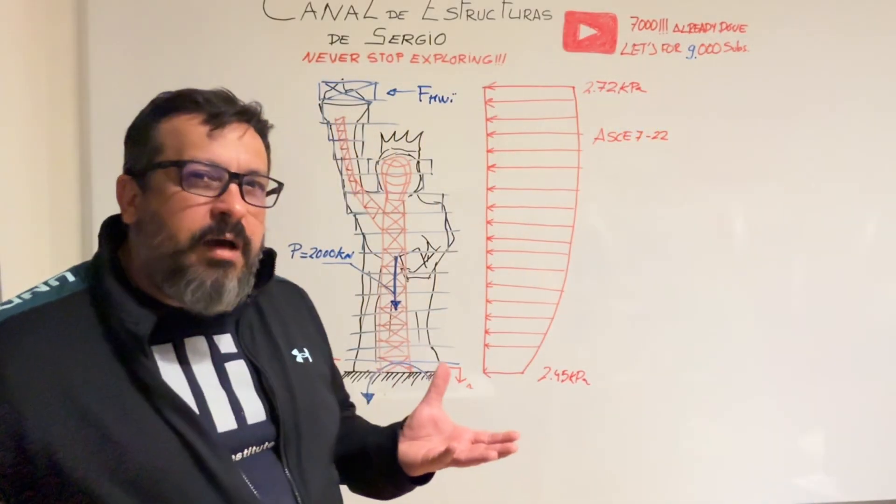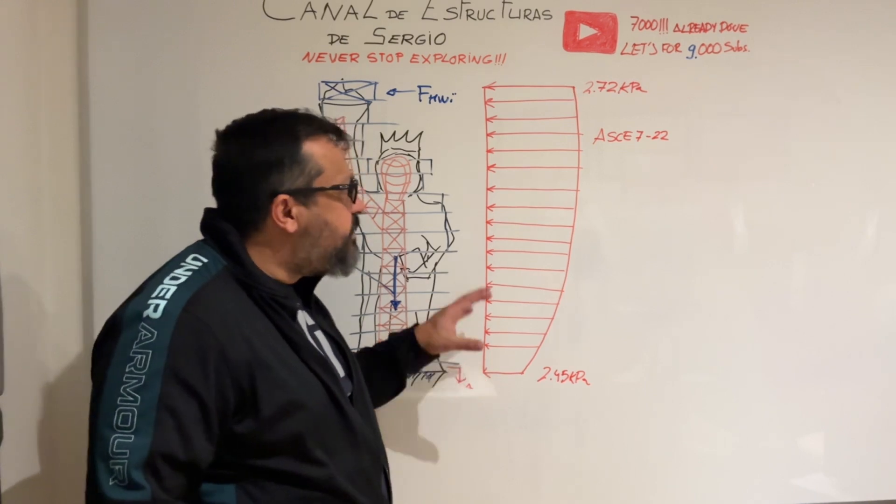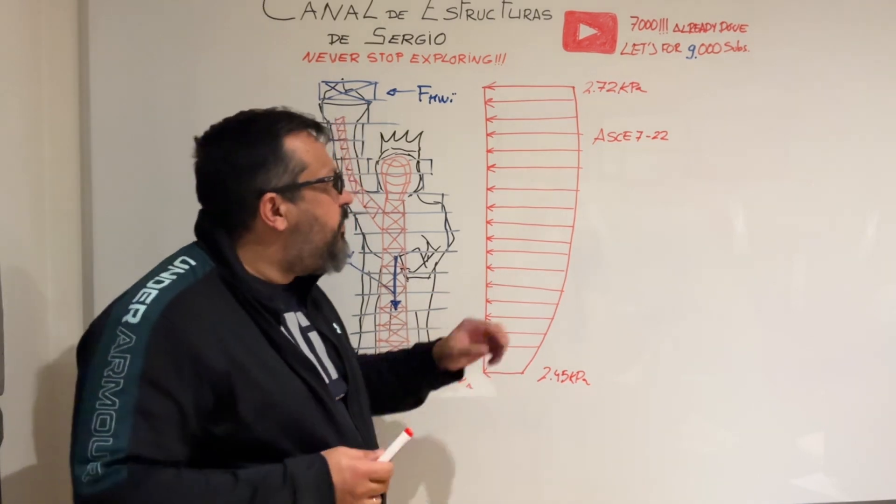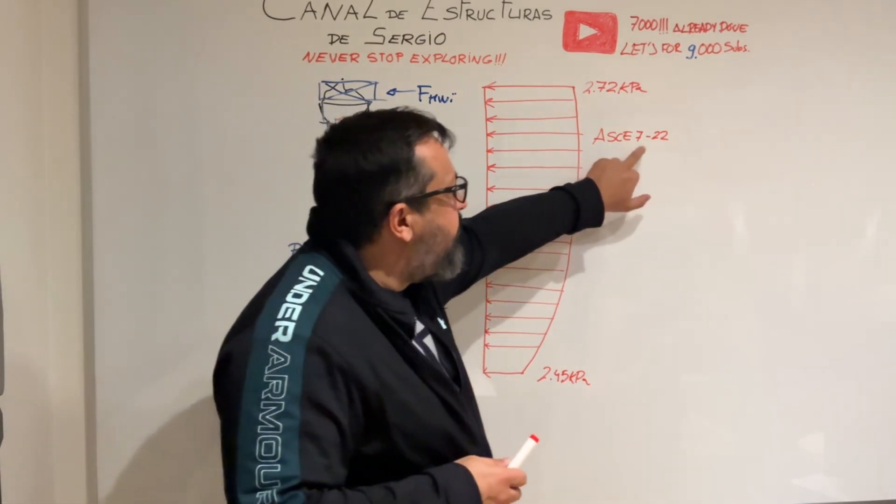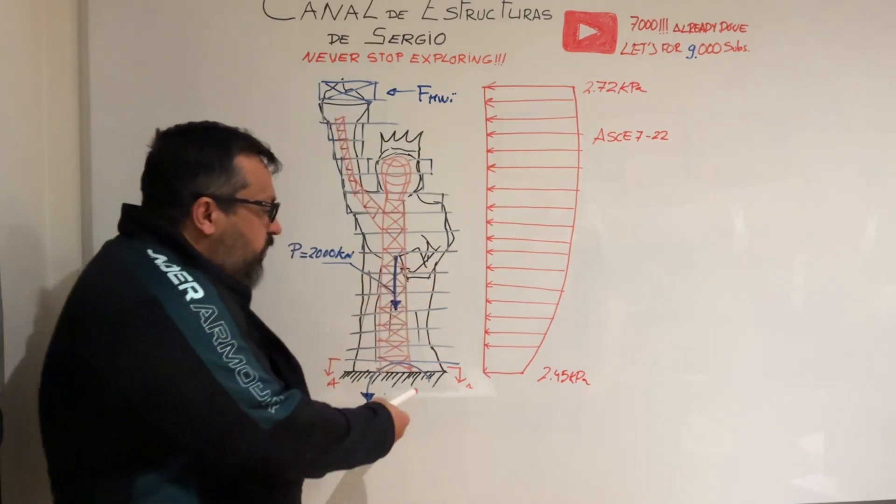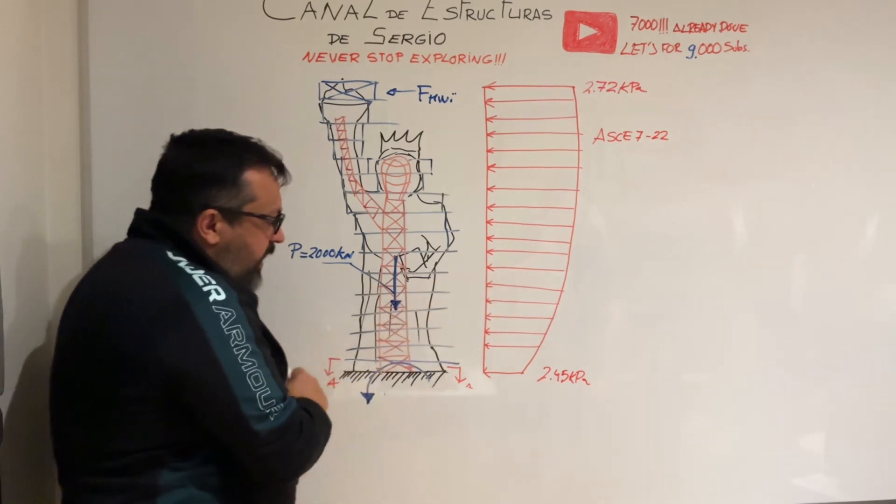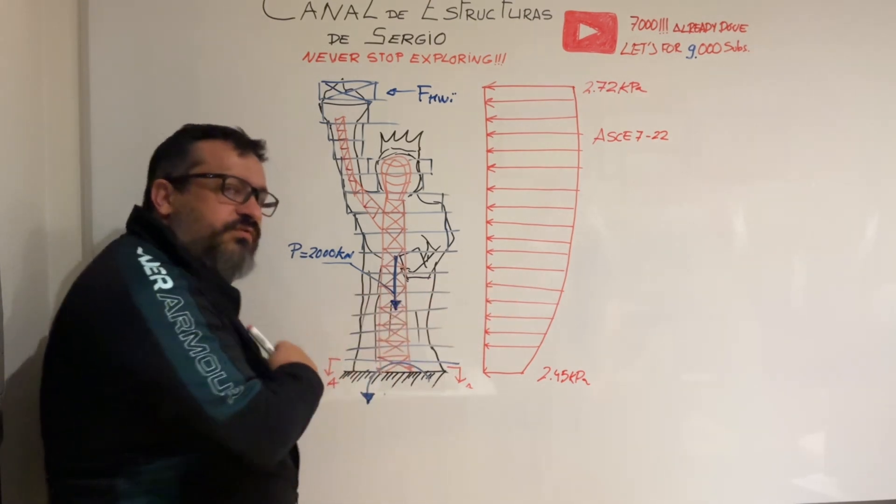And now, what will happen if we use the nowadays design code that is actually used in North America, as ASCE 7-22? We see that the pressure is quite different. And of course, what will be the bending moment and the horizontal resultant forces transmitted by the main structure to the foundation?